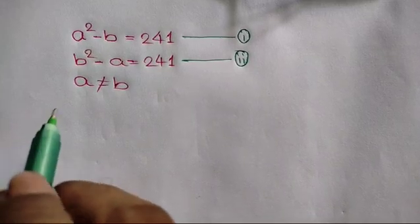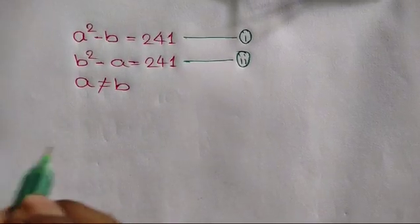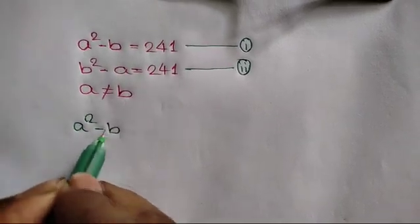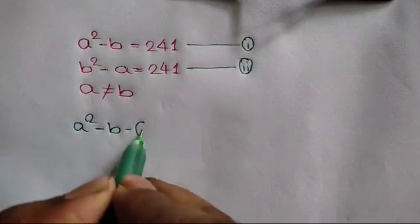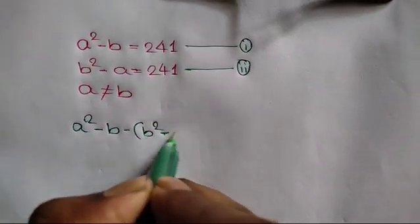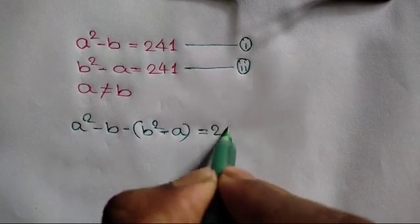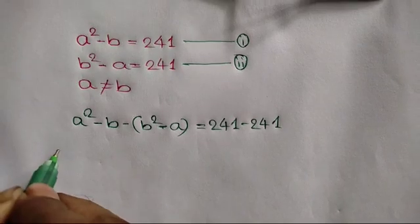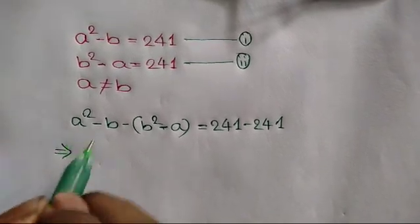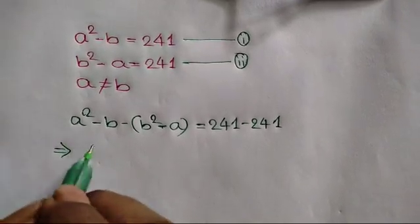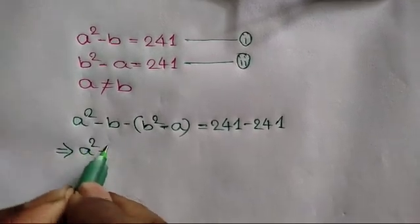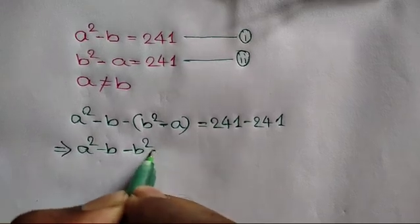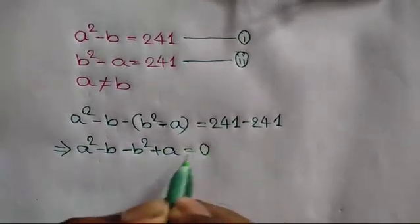Now, subtracting equation 2 from equation 1, we can write: A squared minus B minus bracket B squared minus A is equal to 241 minus 241. Simplifying, we get A squared minus B minus B squared plus A is equal to 0.